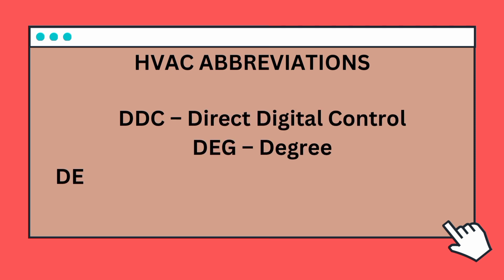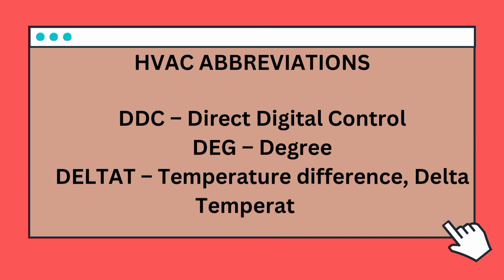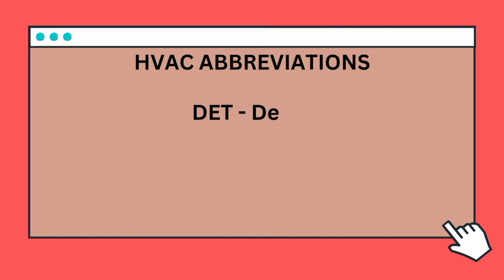DDC — Direct Digital Control. Degree. Delta T — Temperature Difference, Delta Temperature.